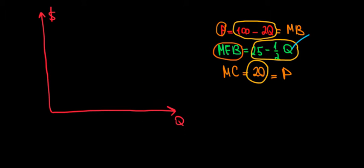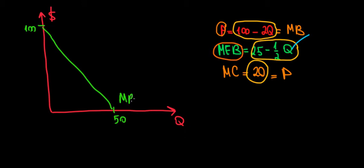We have the marginal benefit, which is 100 minus two times the quantity. The dollar intercept is 100 and the quantity intercept is 50. We connect the two dots to get our marginal benefit curve. We also have the marginal external benefit, which is 25 minus one-half times the quantity, with a dollar intercept of 25 and a quantity intercept of 50.